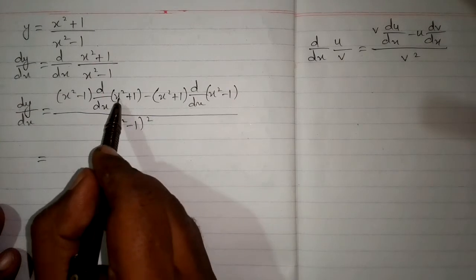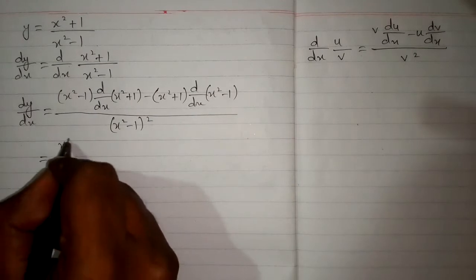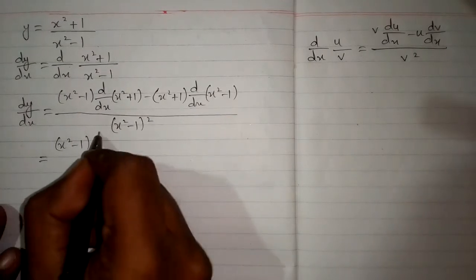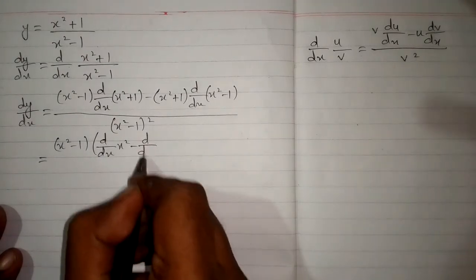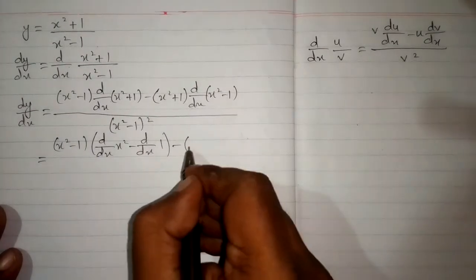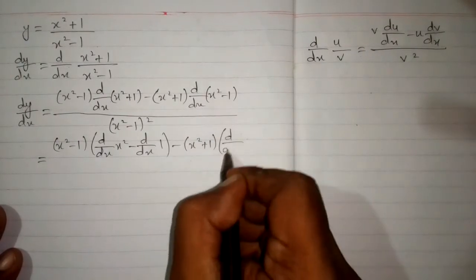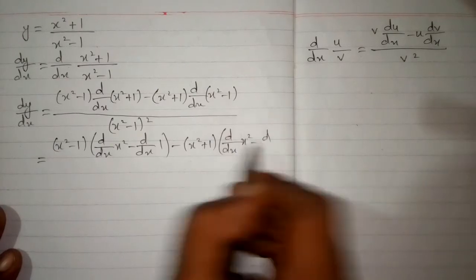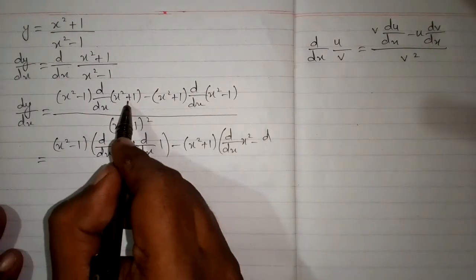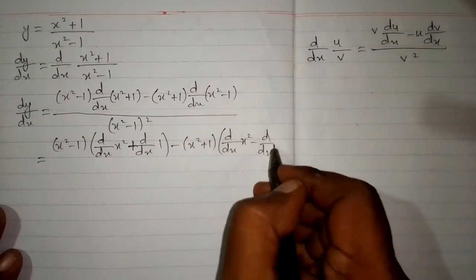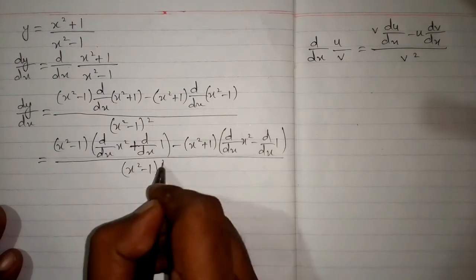Now we have two terms in the bracket so we will apply the derivative on both the terms. So first we will write x square minus 1. Then the derivative of x square minus derivative of 1, minus x square plus 1, then the derivative of x square, all upon x square minus 1 whole square.